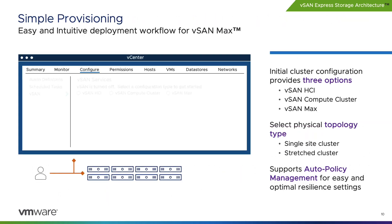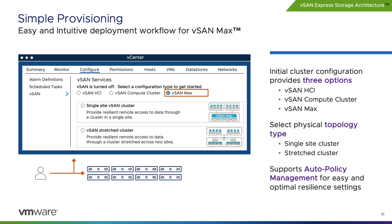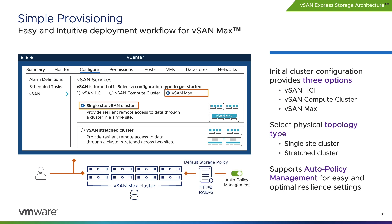Provisioning a vSAN Max cluster is straightforward. At the time of cluster configuration, the administrator simply chooses whether they want a traditional aggregated vSAN HCI cluster, a vSAN Max cluster, or a vSphere cluster using remote vSAN-powered storage — known as a vSAN compute cluster. When choosing vSAN Max, one can configure it as a single-site or stretched cluster. Enabling the Auto Policy Management feature makes management even easier, as vSAN determines the cluster-specific default storage policy for optimal resilience based on cluster size, making subsequent VM provisioning very easy.